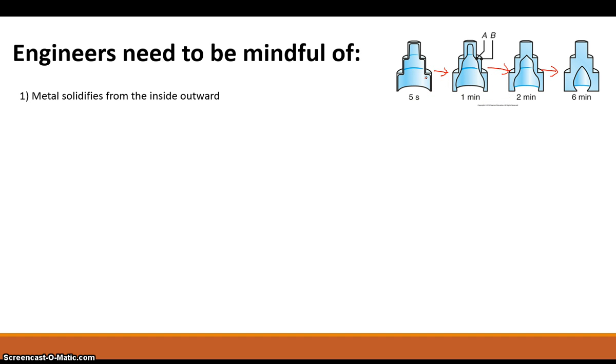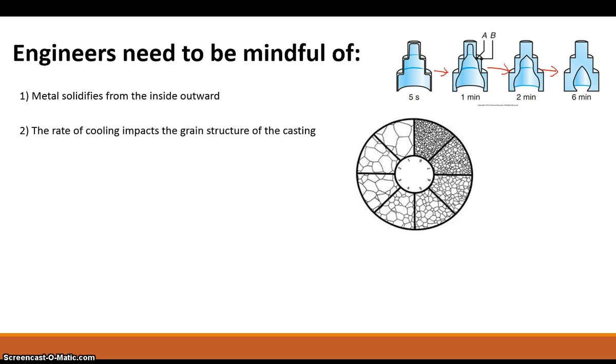Now, one important thing to know about this solidification process is that it can have a really big impact on the importance or the nature of the casting when it's done. The rate of the cooling impacts the grain structure of the casting. So if something cools down quickly, you end up with smaller, more uniformed grains. Cool slower, you end up with longer, more columnar grains.